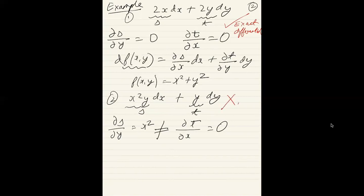So this one is not an exact differential. This is an inexact differential. So this test of checking for the partial derivative is called Euler's test and it's very useful for checking whether something is an exact differential or an inexact differential.